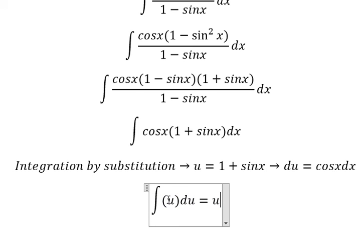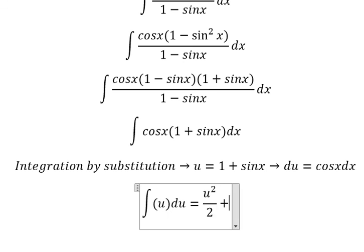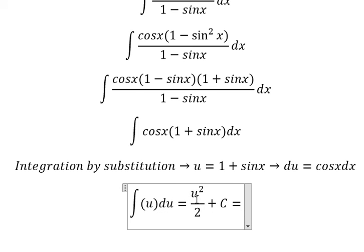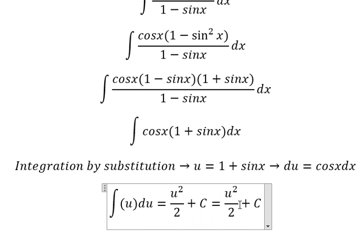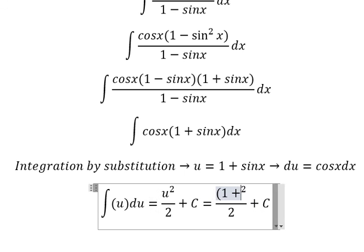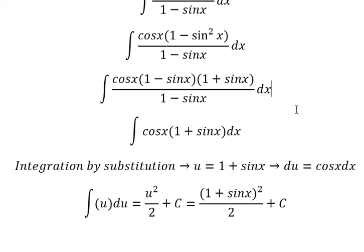And we get u squared over 2 plus c. Substituting back, u equals 1 plus sinx, so the answer is (1 + sinx)² over 2 plus c. This is the end, thank you for watching.